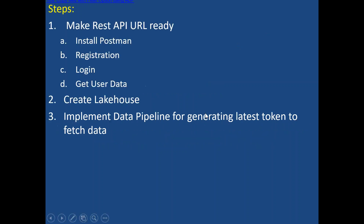Let me show you the steps. The first step, as we discussed, we need to make the REST API URL ready. We have already seen installation of Postman and registration. Now let me show you how to log in and get the token from the Postman tool, and then how to do the same login using a web activity in the data pipeline to get the token. I'll show you both places - from Postman and from the data pipeline.